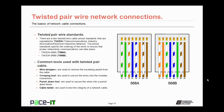Let's talk about the twisted pair wiring standards. There are two twisted pair cable pinout standards regulated by the TIA-EIA — the Telecommunications Industry Association / Electronics Industry Alliance. The pinout standards specify the ordering of the wires to ensure proper networking communication. The two standards are TIA-EIA 568A, or T568A, and TIA-EIA 568B, or T568B, and you can see that the pinouts are slightly different.